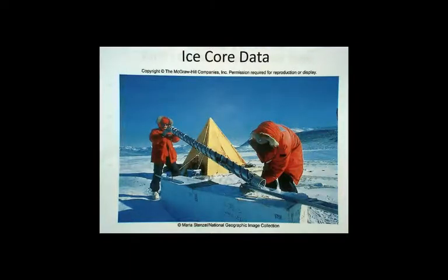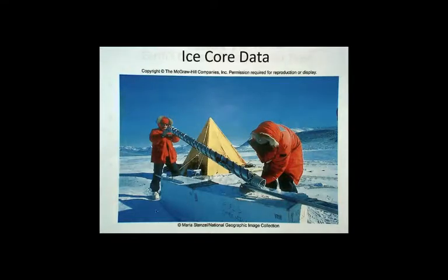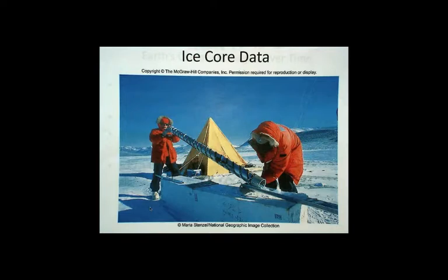They go down to the Antarctic where there's been ice accumulating for hundreds of thousands of years and they drill down. Kind of like looking at the rings on a tree — to date a tree, you can see the changes by year. The snowfall and how cold it is will tell you how much snow there is. The ice cores change seasonally, so they can go back in time and look at the data that's trapped in the ice.